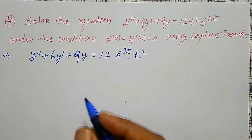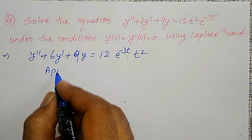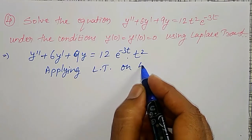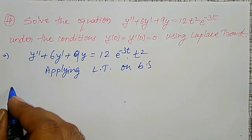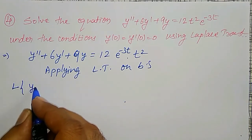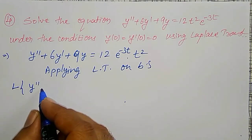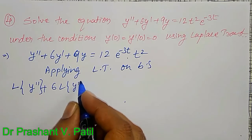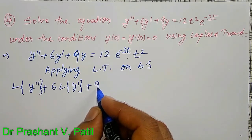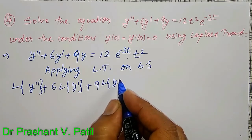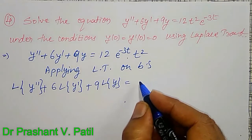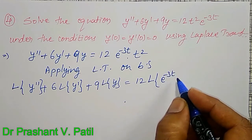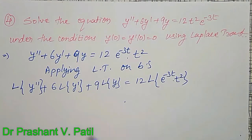Applying Laplace Transform on both sides, I am going to get: Laplace Transform of y double dash, plus 6 times Laplace Transform of y dash, plus 9 times Laplace Transform of y, equal to 12 times Laplace Transform of e to the power minus 3t into t square.